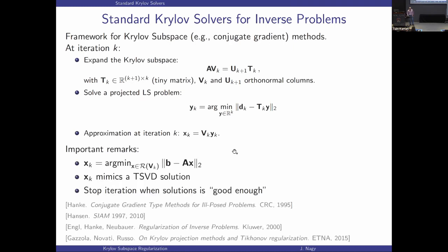One of the nice things about Krylov subspace methods for inverse problems is that they mimic TSVD. In the early iterations, this small matrix T_K picks off the large singular values of the matrix A. Its K singular values will approximate the largest K singular values of A pretty well. As you iterate longer, you start picking up the small singular values, which cause trouble in the solution. So the idea is early stopping — stop before the residual reaches zero, at a point where the solution is good.